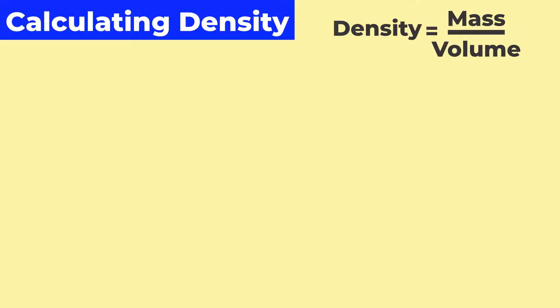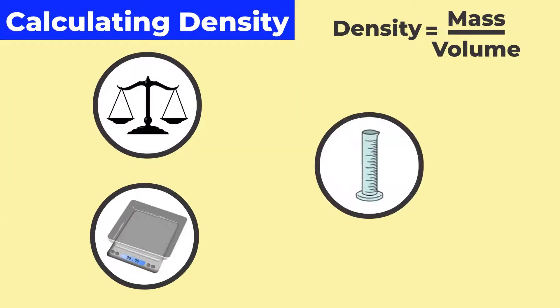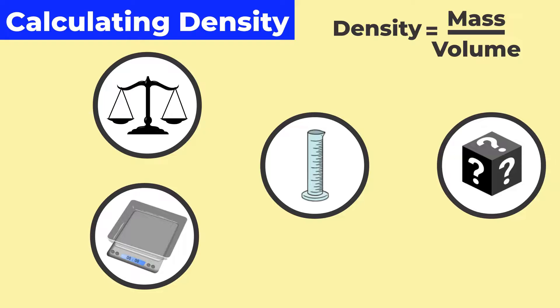First, you would gather all materials such as a pan balance or digital scale, a graduated cylinder, and the unknown substance. A digital scale or pan balance can help measure the mass of the sample while a graduated cylinder can help measure the volume of the sample.